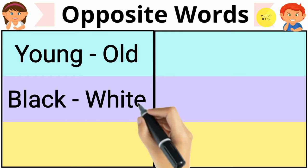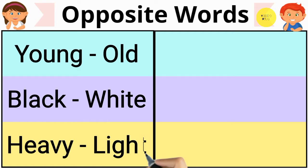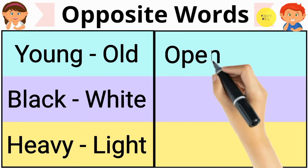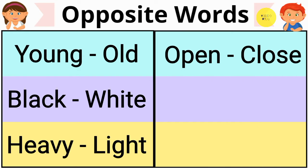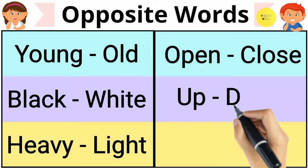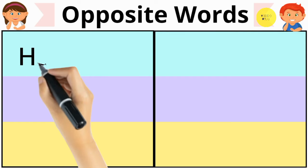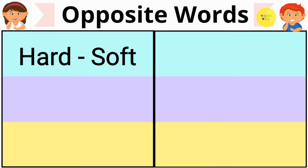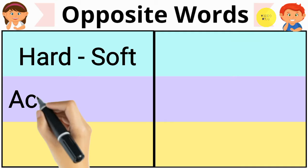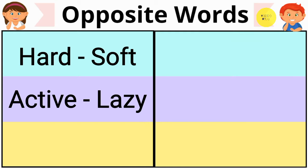Black, white. Heavy, light. Open, close. Up, down. Boy, girl. Hard, soft. Active, lazy.